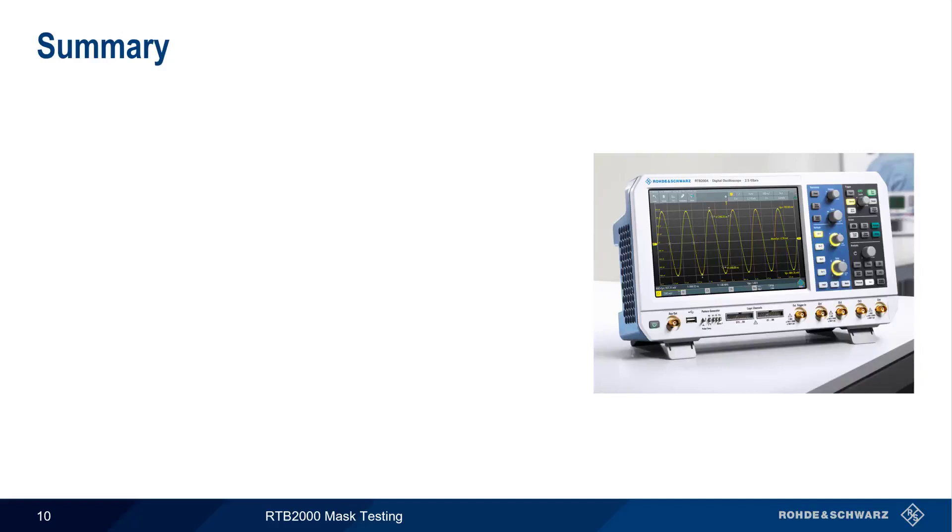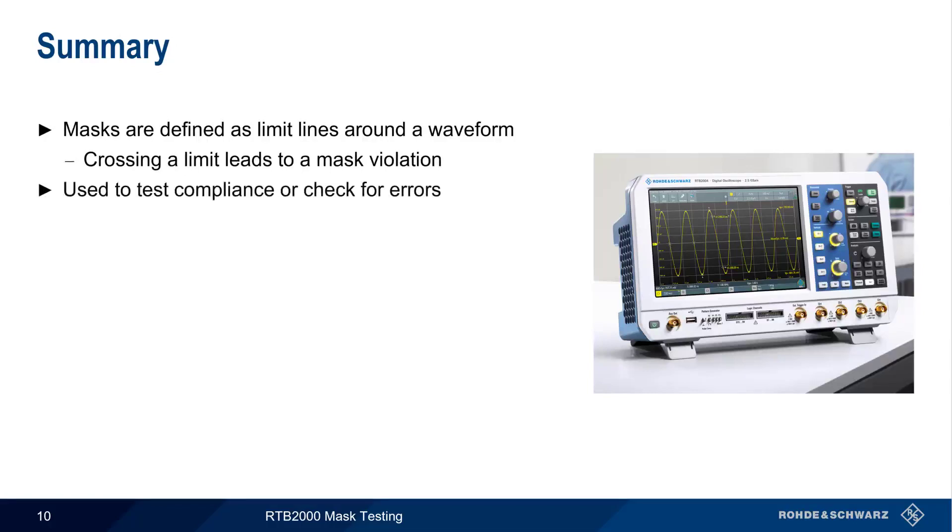Let's end with a brief summary. Masks are defined as limit lines around a waveform, and a mask violation occurs when the acquired waveform crosses any of these limits. Most often, masks are used to test compliance or to check for errors.